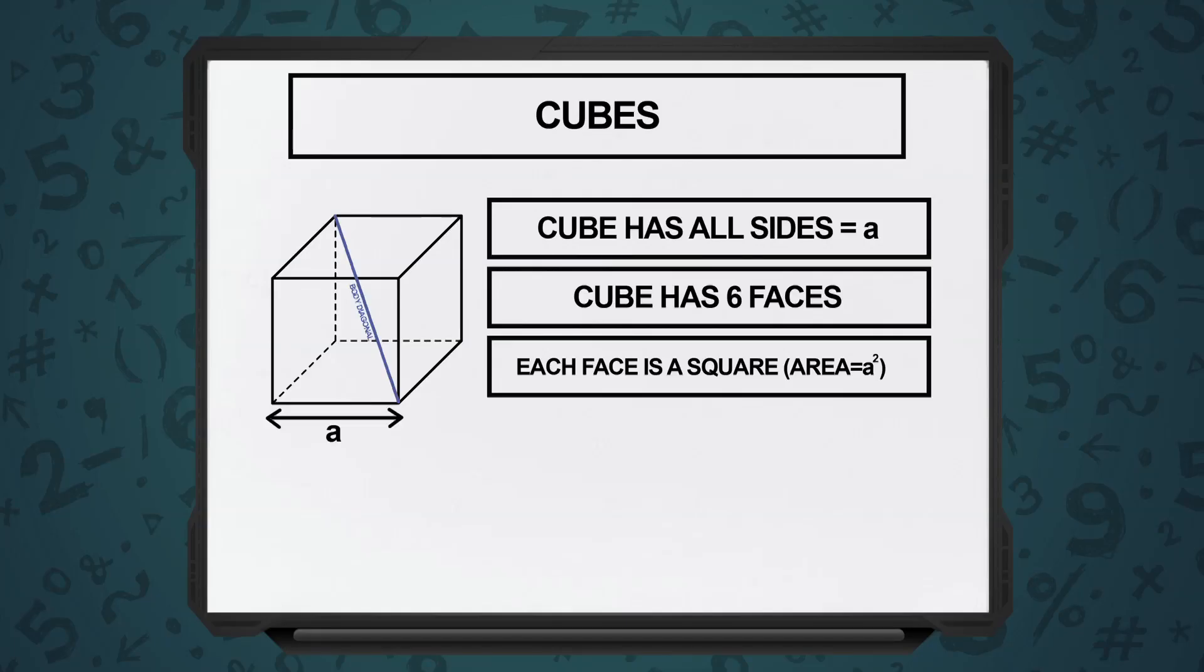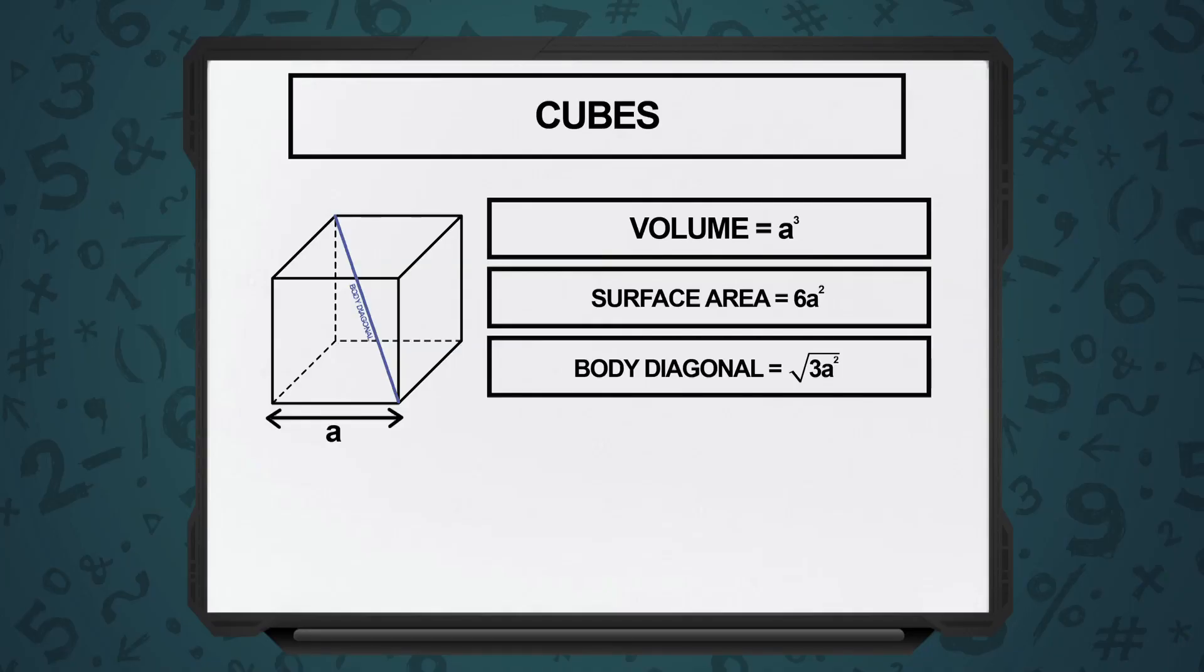So, the surface area of a cube will be six times a square, where a square is the area of one face. That's the area of the square. And the volume is a cube.